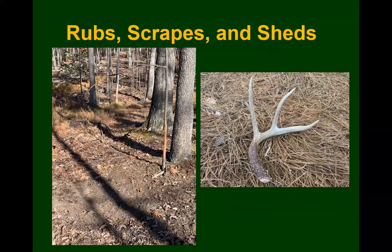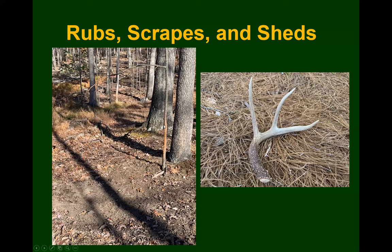Deer also leave rubs, scrapes, and sheds. A scrape is where they scrape the ground with their paws and may lick and rub their horns and scent glands on a branch above that scrape — they usually look for a little branch above so they can rub their scent glands on it. They also rub on the tree itself to get the velvet off their antlers. A deer rub starts close to the ground and goes up to about four feet high. Deer also shed their antlers every year, so finding an antler shed is another good sign that deer are in the area.